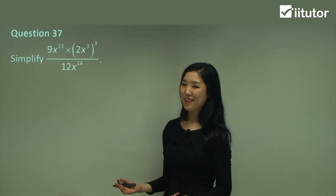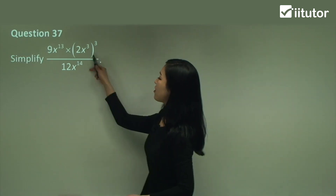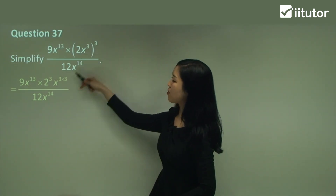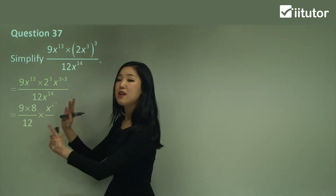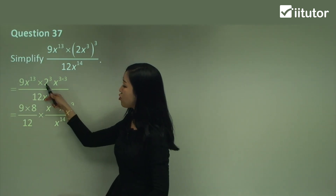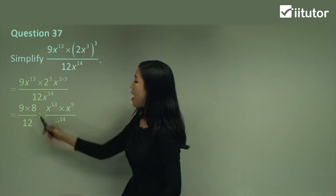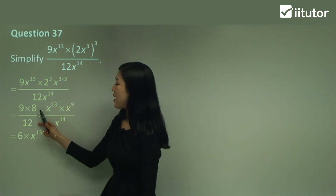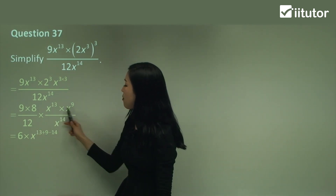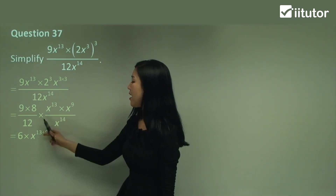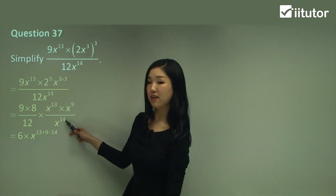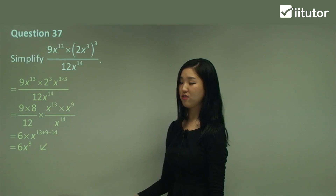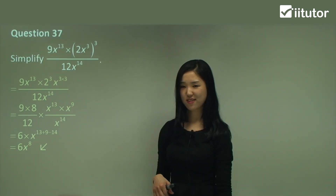Question 37. A pretty large fraction, but we keep it step by step. First, get rid of the bracket — so we go 2 cubed, then x to the power of 3 times 3, multiplying the powers. Gathering numbers out the front: 9 times 2 cubed is 8, and 12 goes on the denominator. The pronumeral simplifies to x to the power of 9. Then 9 times 8 divided by 12 is 6. For the x terms we're multiplying, so we add indices: 13 plus 9, and we're dividing by x to the power of 14, so we subtract 14. That gives 13 plus 9 minus 14 equals 8. The answer is 6x to the power of 8.